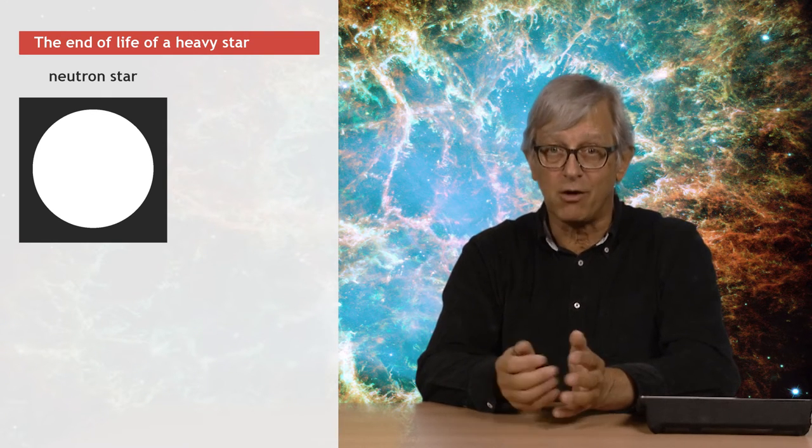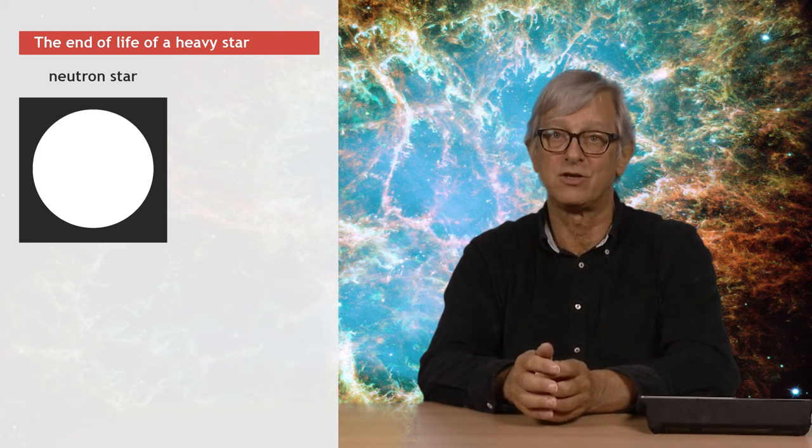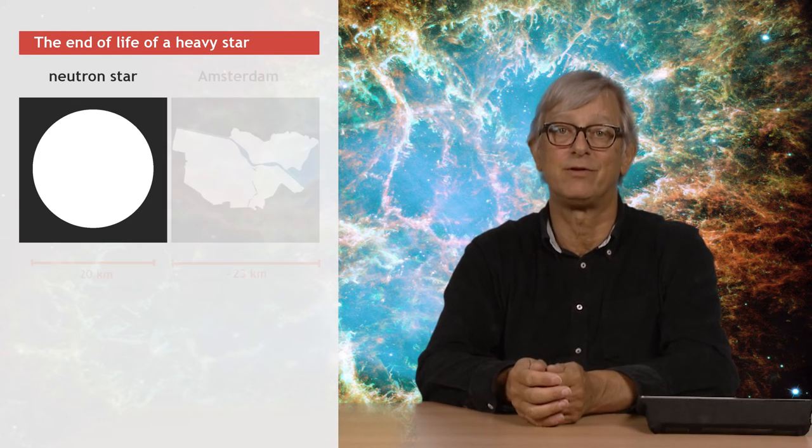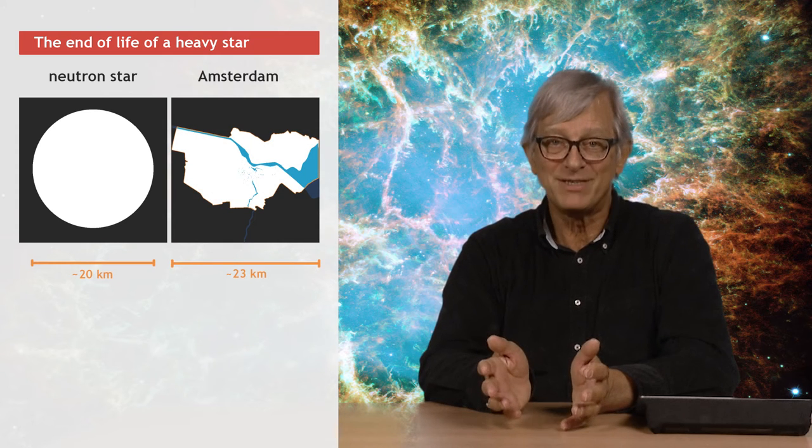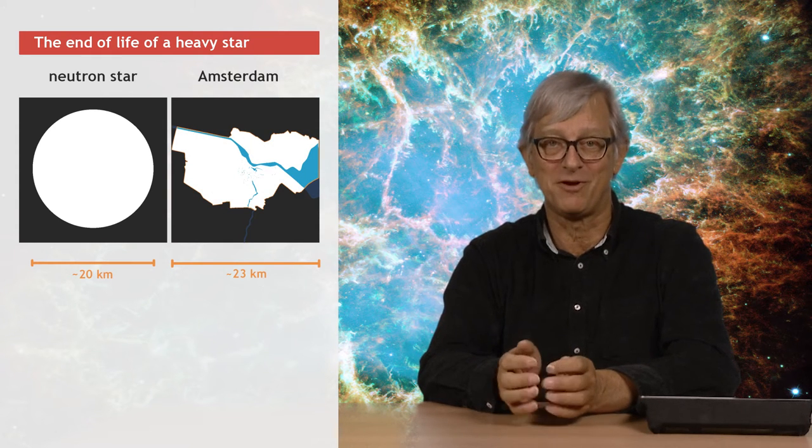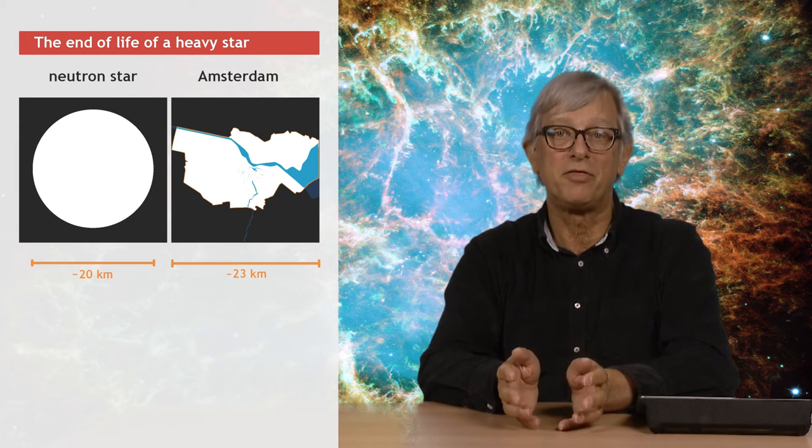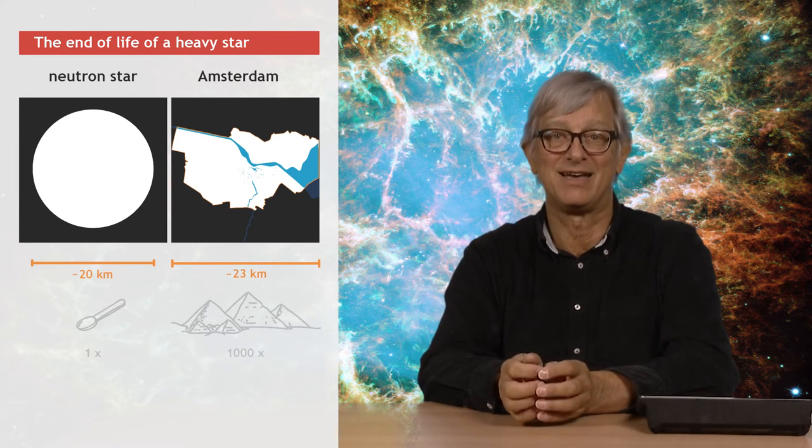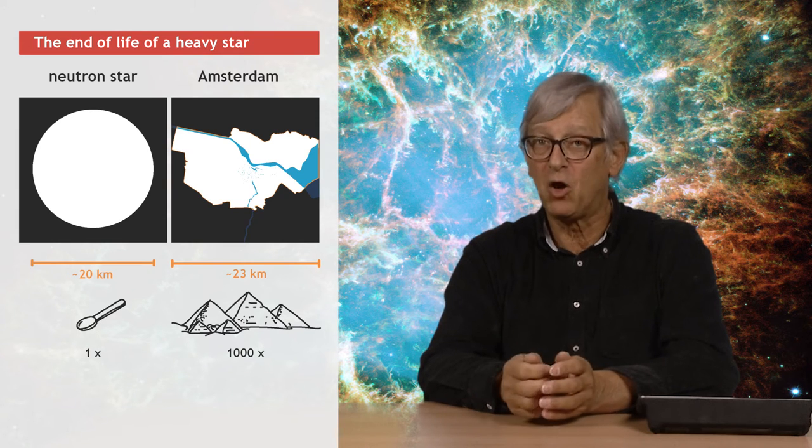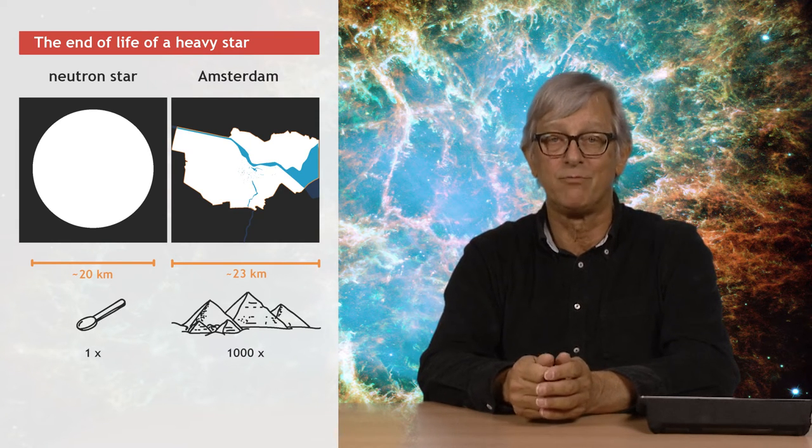So, a neutron star can form 1.5 to 2 times the mass of the sun, but only 20 kilometers in diameter. It has enormous density. One teaspoon of neutron star matter weighs 5.5 billion tons. About a thousand big pyramids of Giza. It would also explode like a trillion megaton nuclear bomb, by the way.